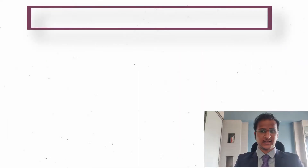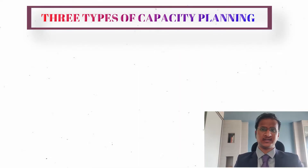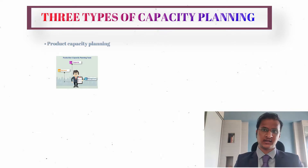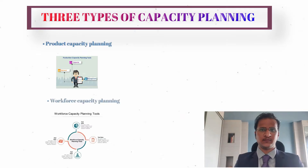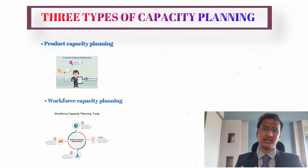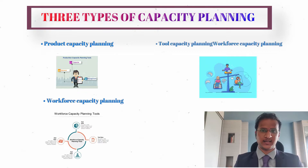The three types of capacity planning in Operations Management are the Product Capacity Planning, the Workforce Capacity Planning and the Tool Capacity Planning.